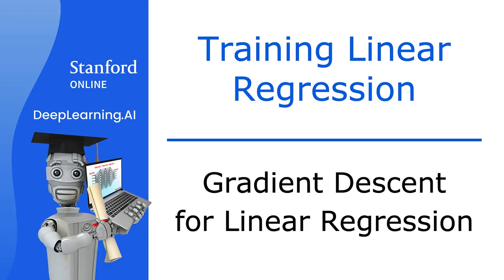So previously, you took a look at the linear regression model and then the cost function and then the gradient descent algorithm. In this video, we're going to put it all together and use the squared error cost function for the linear regression model with gradient descent. This will allow us to train the linear regression model to fit a straight line to our training data.